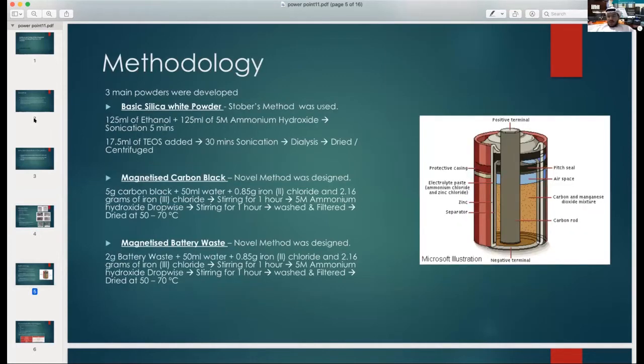So the methodology of the three, so three main powders were made in my project. So first one was basic silica white powder. I know white powder is not the best thing to use in fingerprints because it will have a reverse in the friction ridge skin. So the friction ridge skins will be in white and the furrows are going to be in black. The method we used here was STOBER method. Then using the magnetized carbon black was just a novel method which I tried to come up with. Also the magnetized powder was a novel method which I came up with.